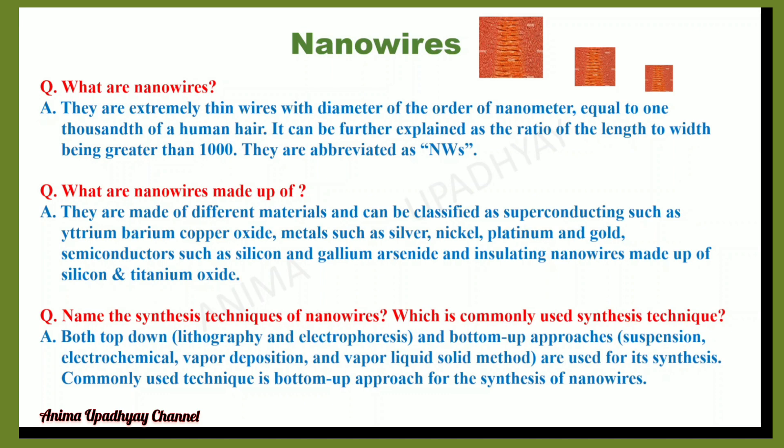What are nanowires made up of? They are made up of different materials and can be classified as: superconducting, such as barium copper oxide; metals, such as silver, nickel, platinum, and gold; semiconductors, such as silicon and gallium arsenide; and insulating nanowires made up of silicon and titanium oxide.